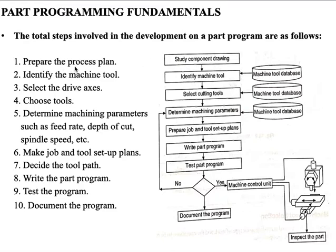The total steps involved in the development of part programming are: prepare the process plan, machine tool selection, drive axis selection, cutting tool selection, machining parameter planning, toolpath planning, and job and tool setup planning. These are the fundamental steps of part programming.